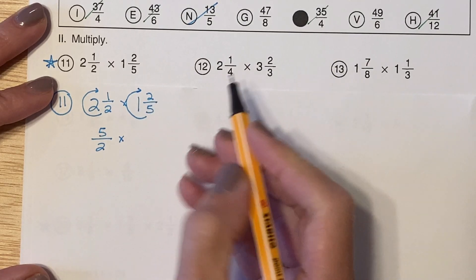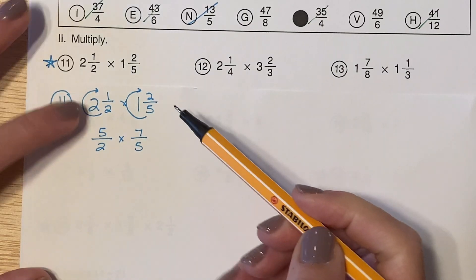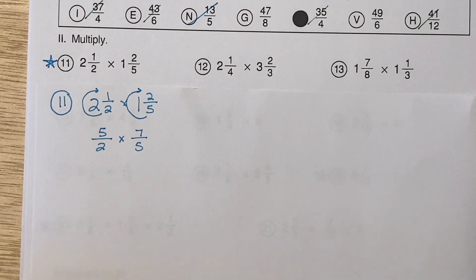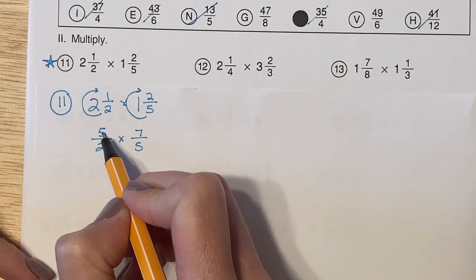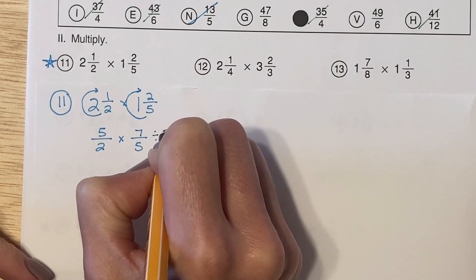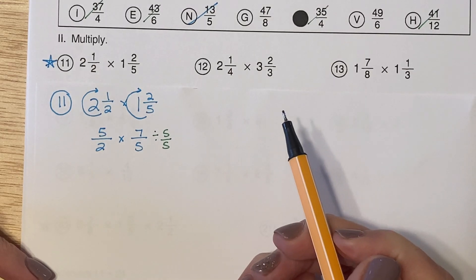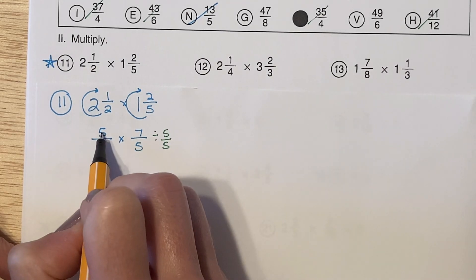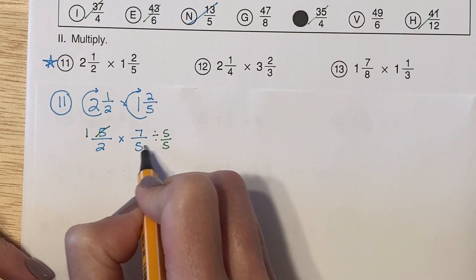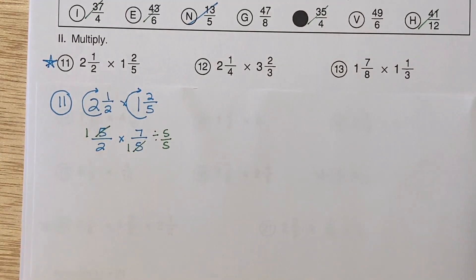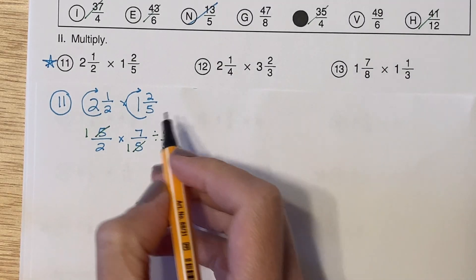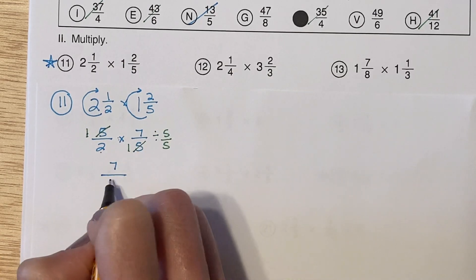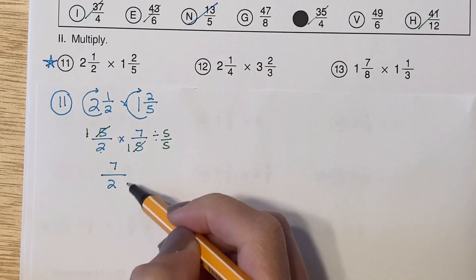So I have five halves times seven fifths, and I can multiply straight across. But I do notice that I have a five in my numerator and a five in my denominator, so I'm going to simplify before I multiply. I'm going to divide by five-fifths, which is the same thing as dividing by one — we're using our identity property. Five divided by five is one, and five divided by five is one. Now I'm going to multiply straight across: one times seven is seven, two times one is two. So I have the answer of seven halves.